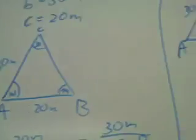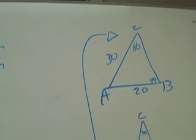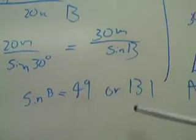But since it's an ambiguous case, we have two possible triangles. 180 minus 49 equals 131. So right here we have both triangles.